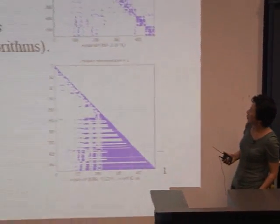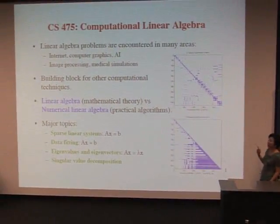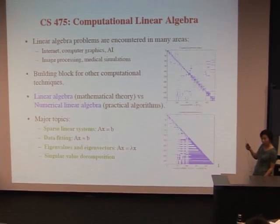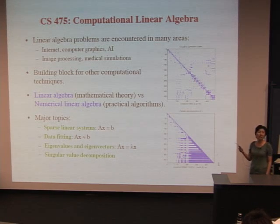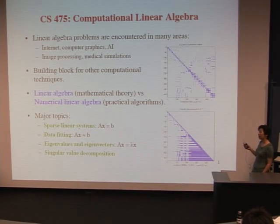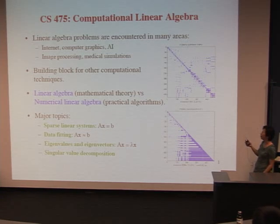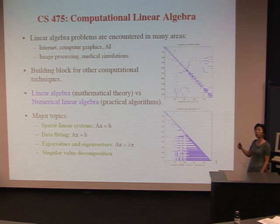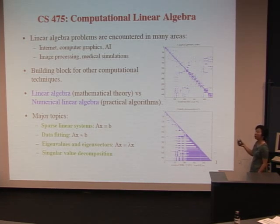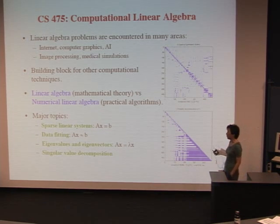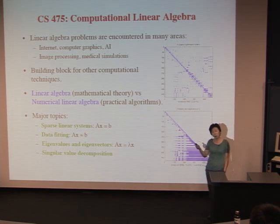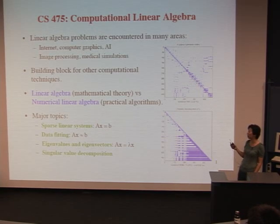CS475 is another subsequent course in scientific computing. It looks more in-depth at one particular subject: linear algebra computation. This is an important subject because it's the basis for all scientific computing techniques and has many applications. For example, Google PageRank involves solving an eigenvalue problem. Image processing tasks like de-blurring or noise removal can all be formulated as linear equation solve problems. You'll get an in-depth look at solving sparse large linear systems, where sparse means matrix A has many zero entries and only a small percentage is non-zero.